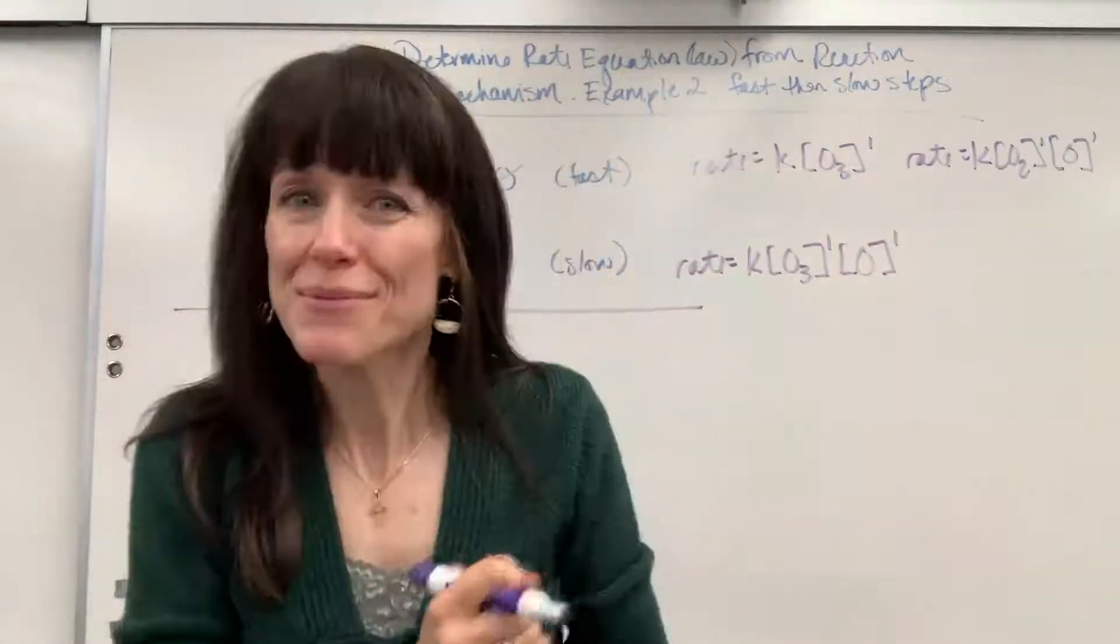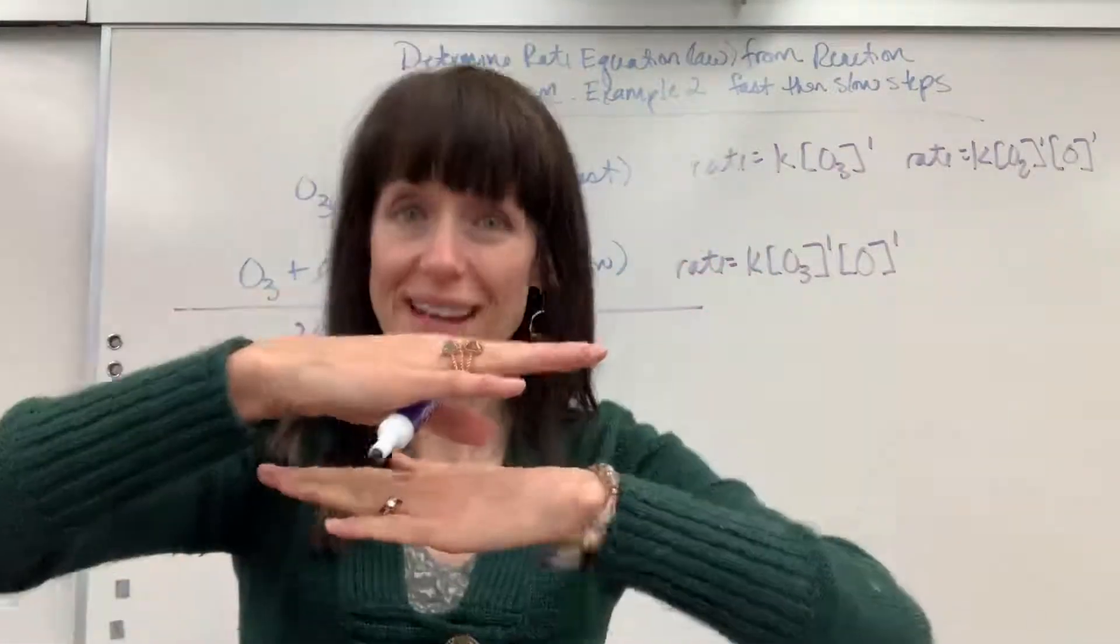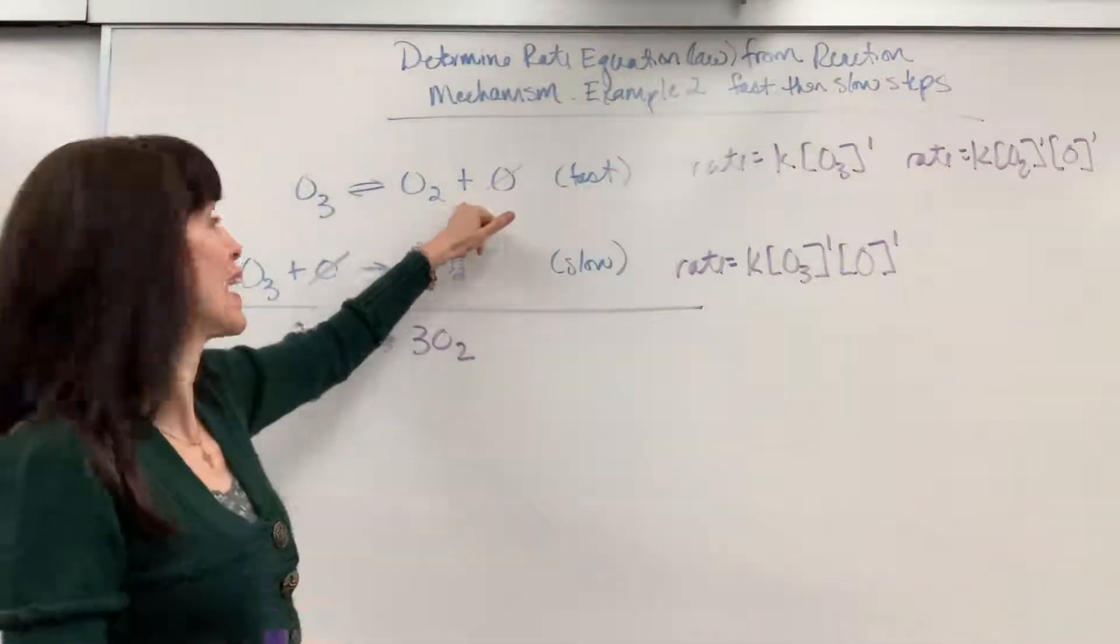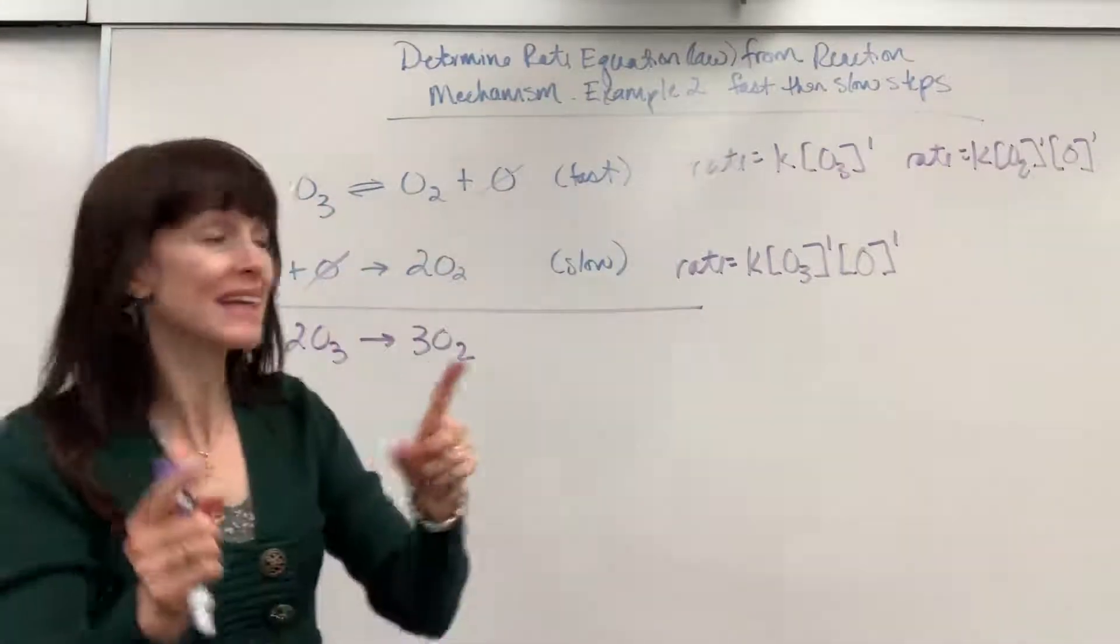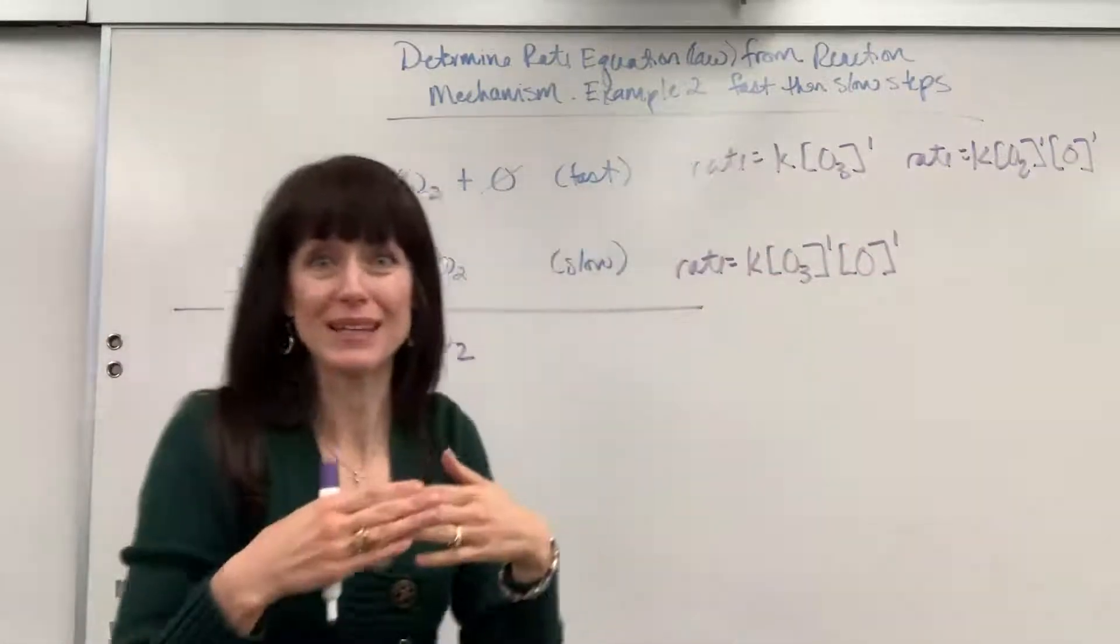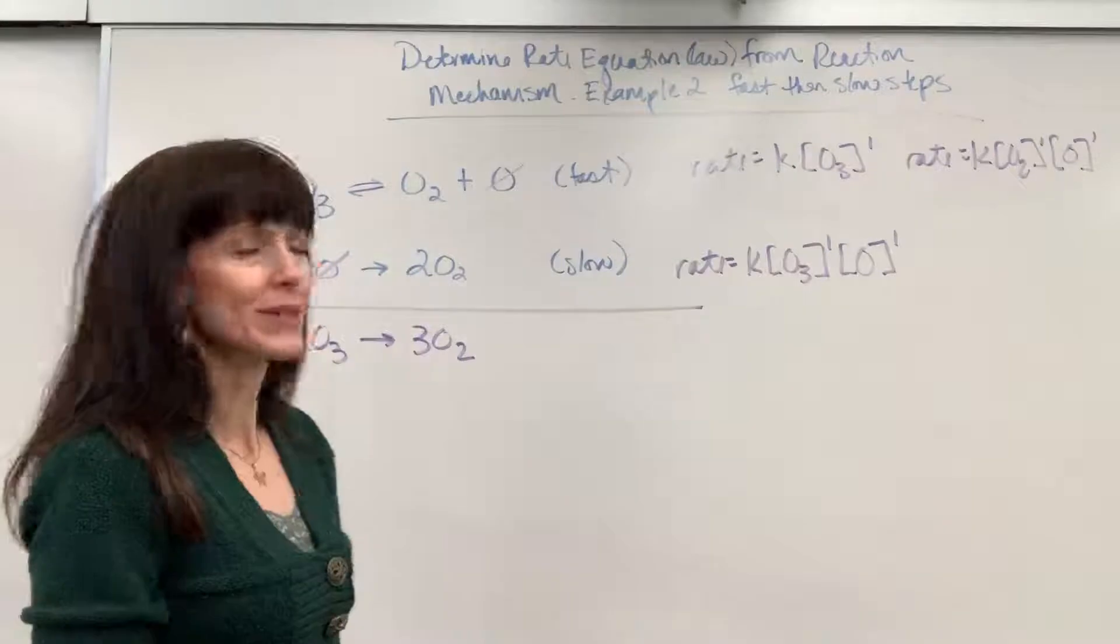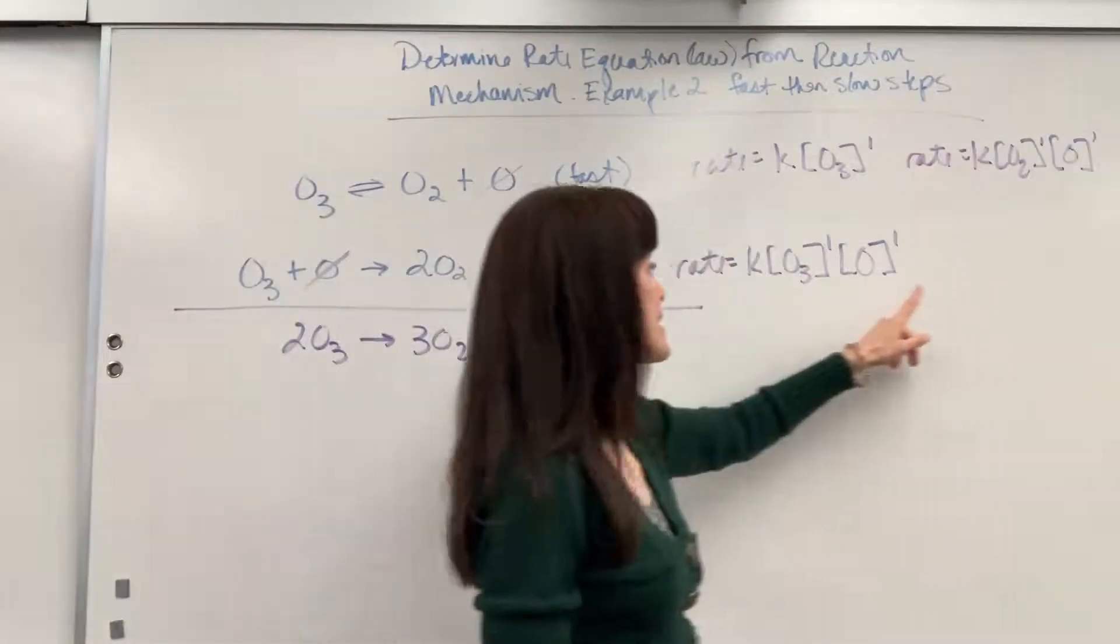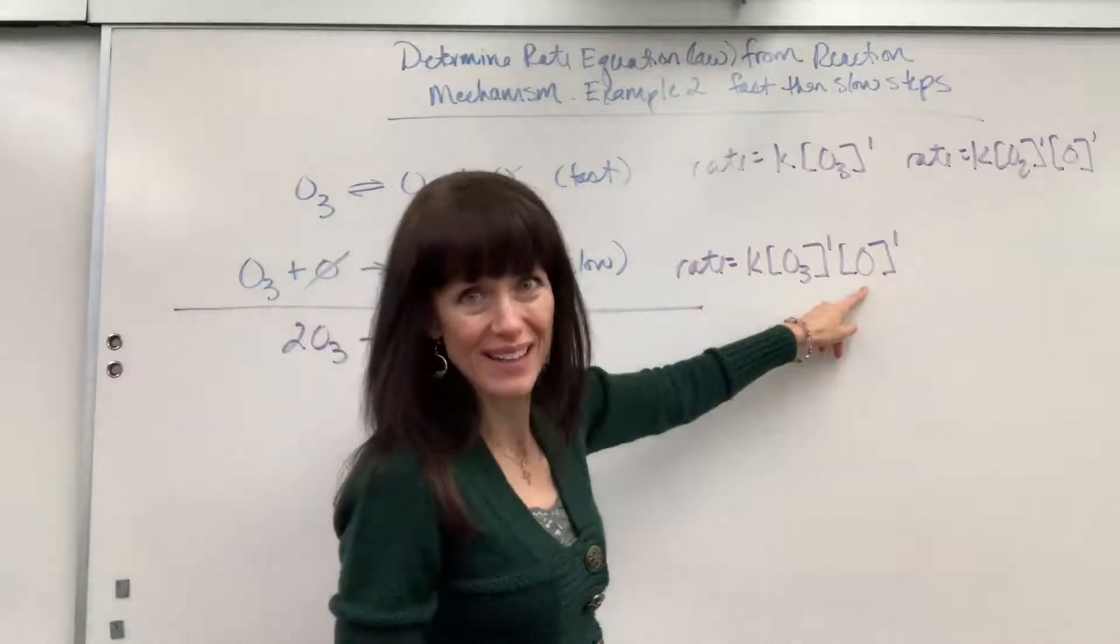Now, with equilibrium, we have equal rates. The rate at which this goes forward is the same rate at which this goes back, which means those rates are the same. I can set those two equal to each other. Why do I want to do that? I want to solve for that intermediate so that I can substitute it and get rid of it right here.